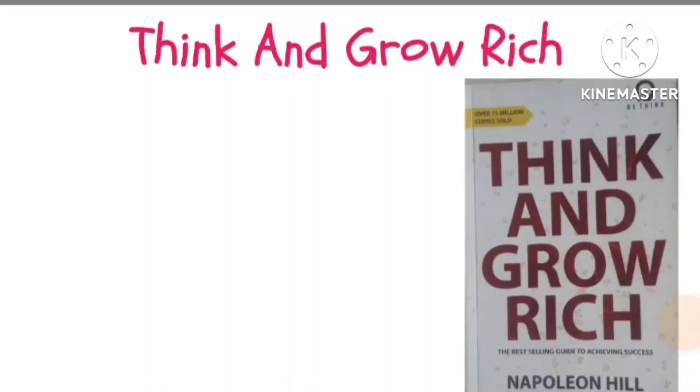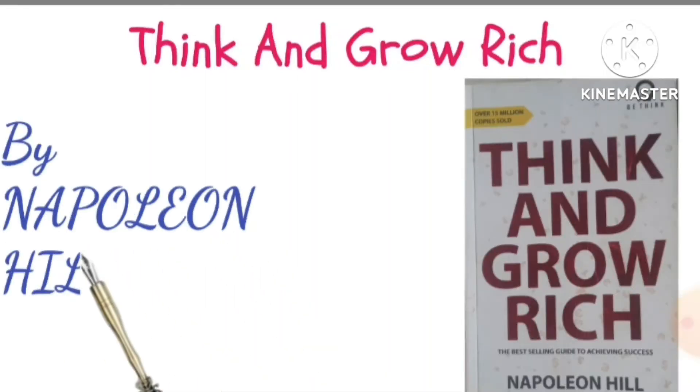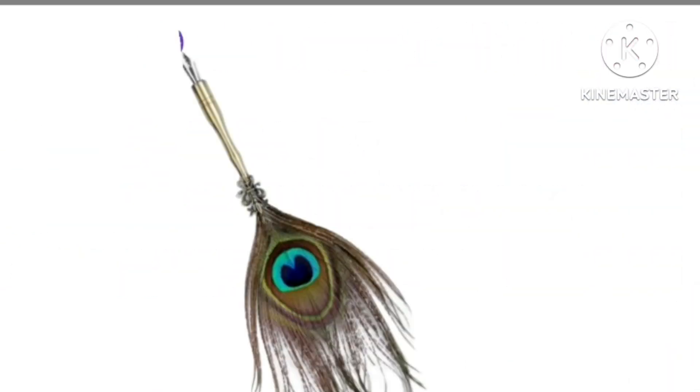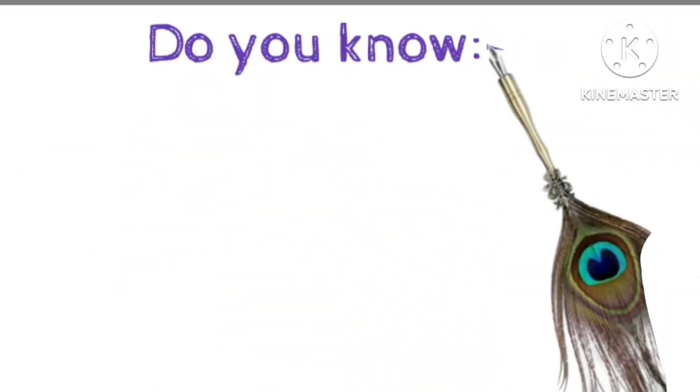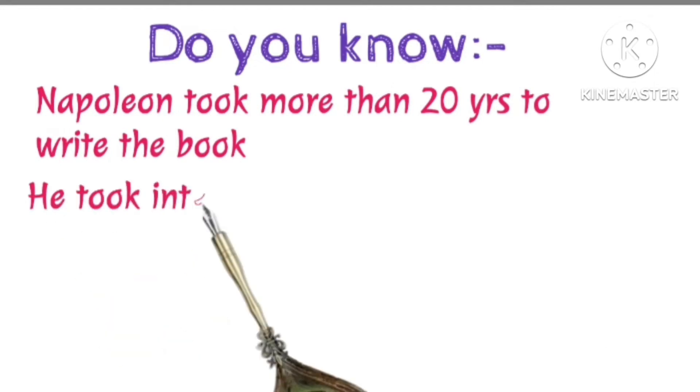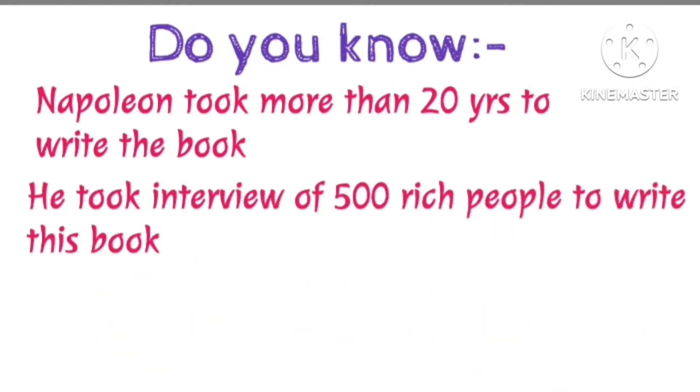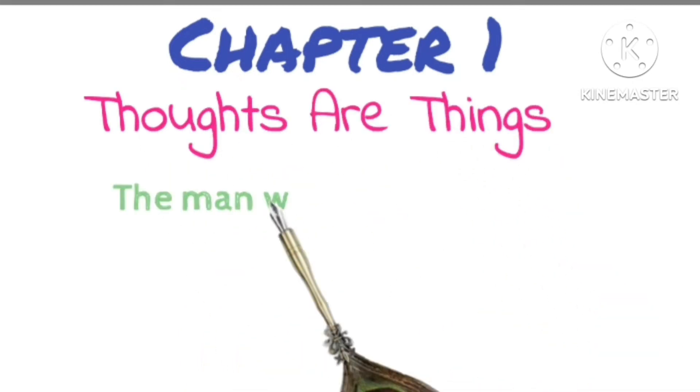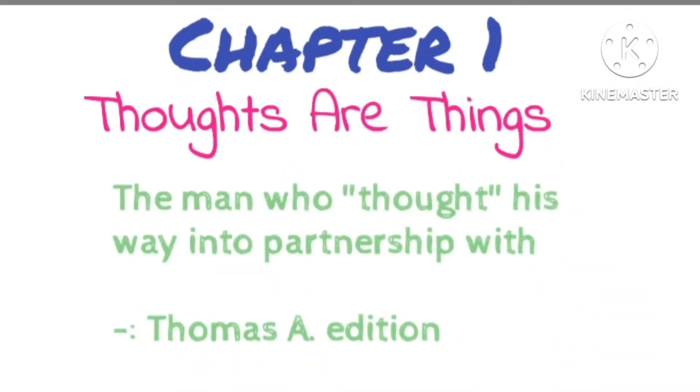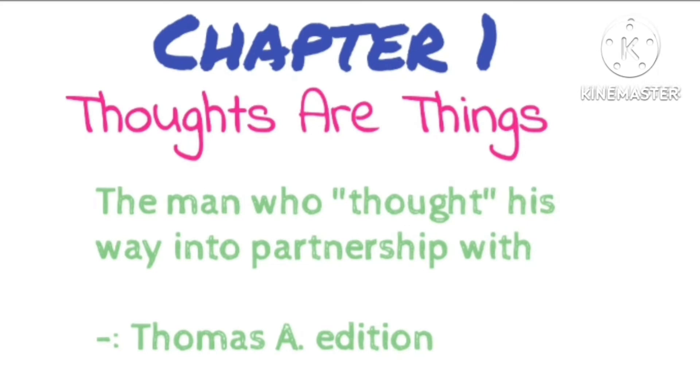Think and Grow Rich by Napoleon Hill. First Chapter: Thoughts Are Things. The man who thought his way into partnership with Thomas A. Edison. Truly, thoughts are things, and powerful things at that, when they are mixed with definiteness of purpose, persistence, and a burning desire for their translation into riches or other material objects.